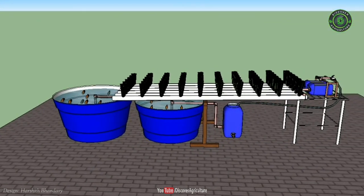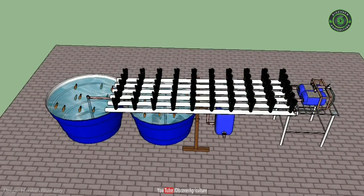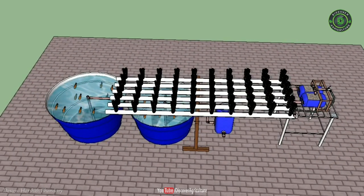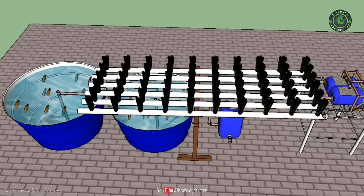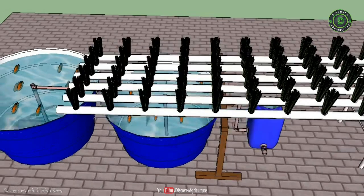Aquaponics is a revolutionary system for growing plants by fertilizing them with the wastewater from fish in a sustainable closed system. Designed as a combination of aquaculture and hydroponics, aquaponic gardening is an amazingly productive way to grow organic vegetables.